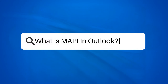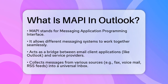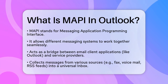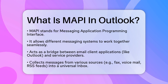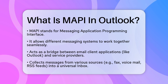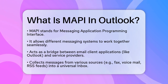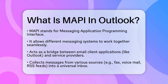What is MAPI in Outlook? If you're curious about how Outlook and other email clients interact with different messaging systems, you're about to uncover a key piece of technology called MAPI. MAPI, or Messaging Application Programming Interface, is a set of tools and standards that allow different messaging systems to work together seamlessly. It acts as a bridge between the front-end email client applications, like Outlook, and the back-end service providers.